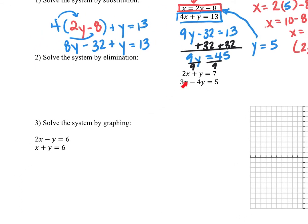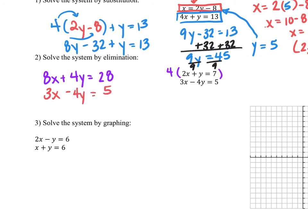If we want to solve by elimination, the process is to get one of the variables to have the same coefficient. It's easier to get the plus-minus pair to be the same. So I'm going to multiply this top equation by positive 4. When I do that, I get 8x plus 4y is equal to 28. The next equation I'll leave alone: 3x minus 4y is equal to 5.